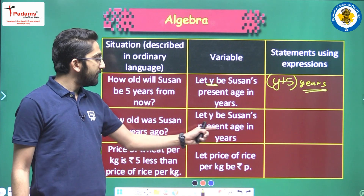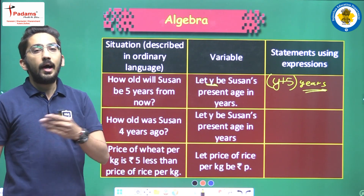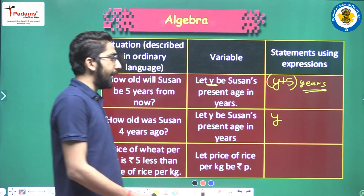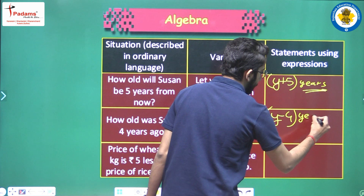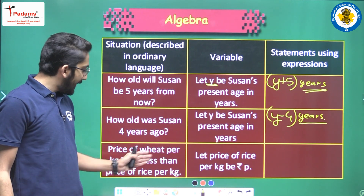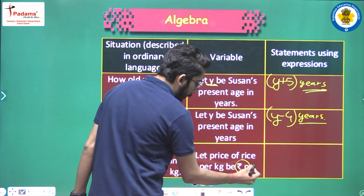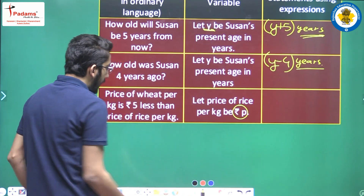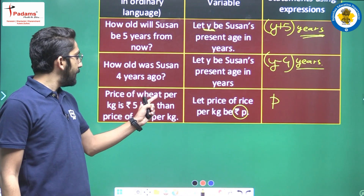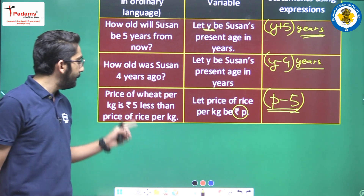Next: let Y be Susan's present age. How old was Susan four years ago? That will be Y minus four years. Next: the price of wheat per kg is rupees five less than the price of rice per kg. The price of rice per kg is rupees p. So if rice's price is p, then the price of wheat will be P minus five, because it is five rupees less.